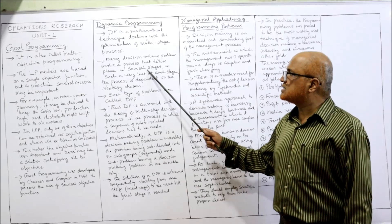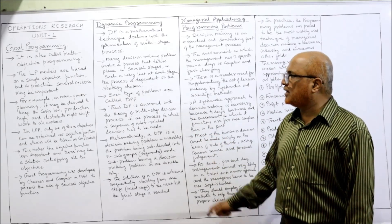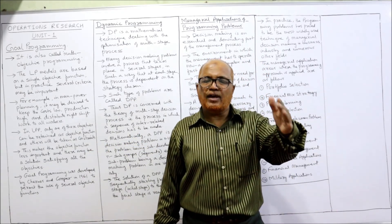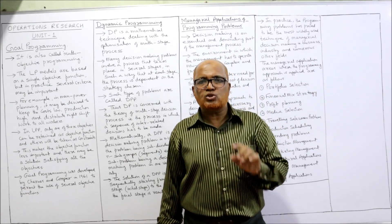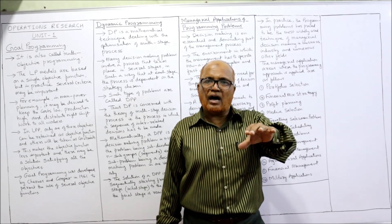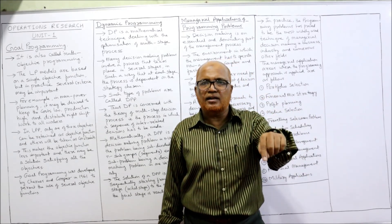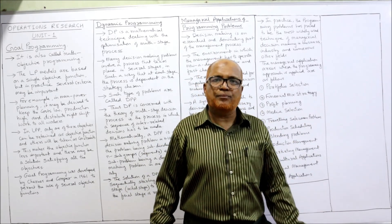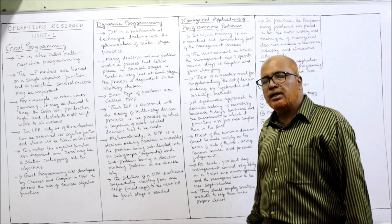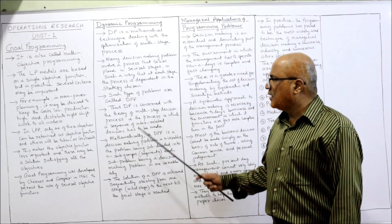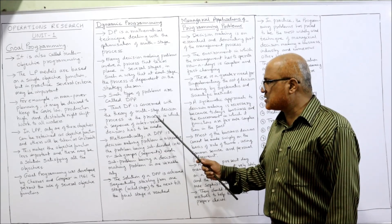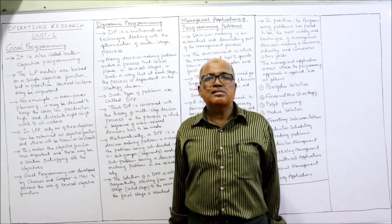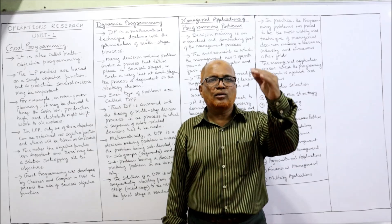Many decision-making problems involve a process that takes place in several stages, such that at each stage the process is dependent on the strategy chosen. A complex problem consisting of a number of stages requires a decision at each stage. After completing one stage and taking a decision, the next stage again requires a decision. A big problem is divided into a number of stages — such problems are called dynamic programming problems (DPP).